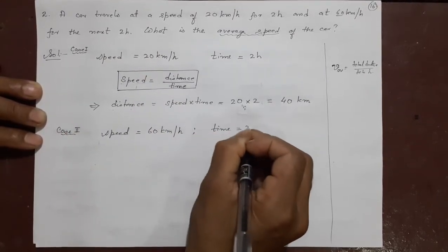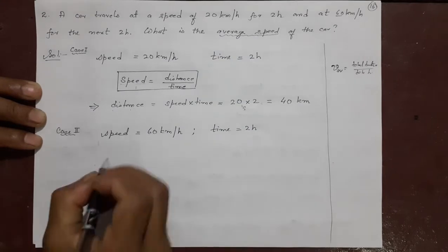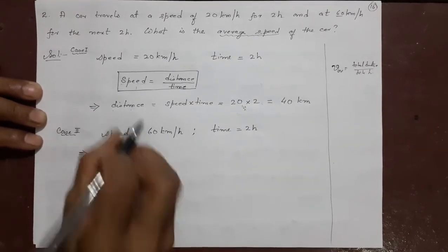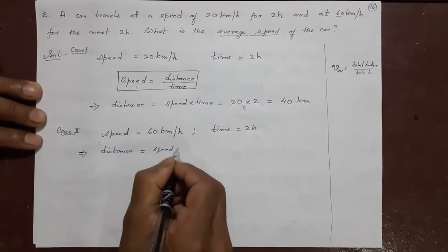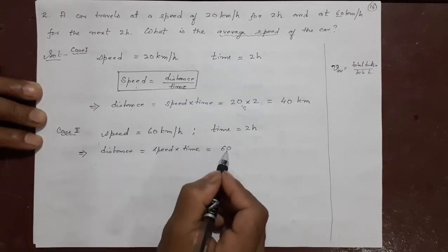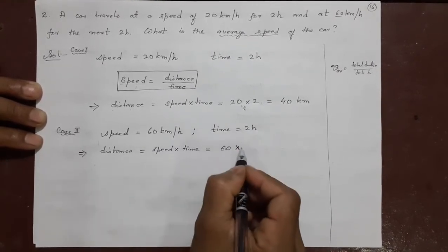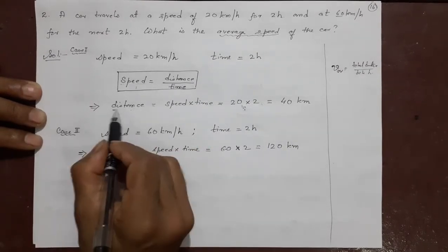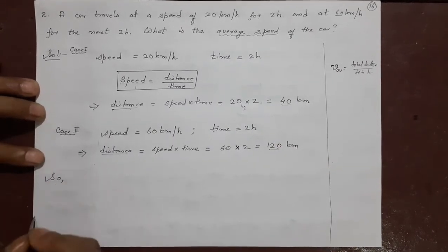Time, again 2 hour. How I got here? Next 2 hour. First one is also 2 hour. Next is also 2 hour. So again, same formula. No need to rewrite this again. Speed into time. Speed is 60. In place of speed, I wrote 60. Time is 2 hour. This gives me 120 kilometer. Now you got both the distance: 40 and 120. So I can write the answer.